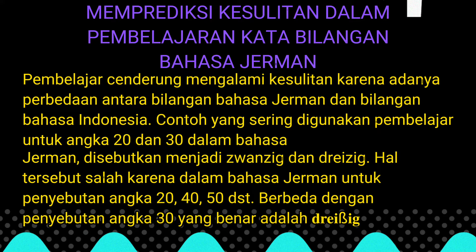Pembelajar cenderung mengalami kesulitan karena adanya perbedaan antara bilangan dalam bahasa Jerman dan bahasa Indonesia. Contoh yang sering terjadi: untuk angka 20 dan 30, dalam bahasa Jerman sering salah disebutkan menjadi zwanzig dan dreisig. Hal tersebut salah karena dalam bahasa Jerman untuk penyebutan angka dua puluh, empat puluh, lima puluh, dan seterusnya berbeda dengan angka tiga puluh. Yang benar adalah dreißig.